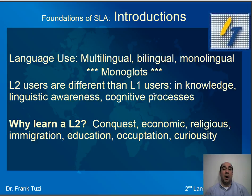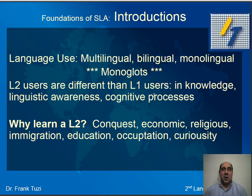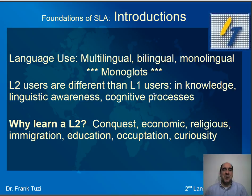We're talking about language use and people who are multilingual — they know more than two languages. Bilingual is knowing two languages. Monolingual is knowing one language. There's also the word monoglot, which I use as a pejorative because I believe everybody should learn more than one language. As an aside, I heard this joke in Germany: someone who speaks three languages is multilingual, two languages is bilingual, and someone who speaks one language is an American.